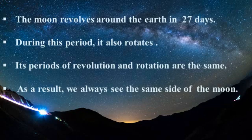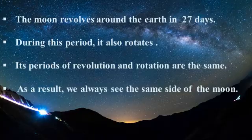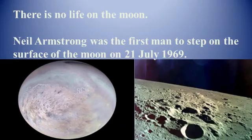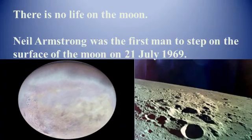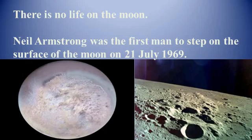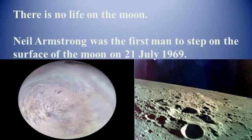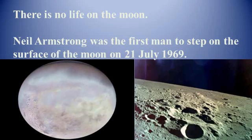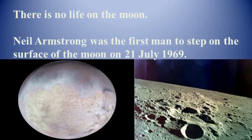The Moon appears as a full disk when we see the whole of the lit-up side — this is called Full Moon or Purnima. When the part facing us does not receive sunlight, we cannot see the Moon — this is known as New Moon or Amavasya. The Moon does not have conditions favourable for life: it has neither water nor air, so there is no life on the Moon. It has mountains, plains, and depressions on its surface.